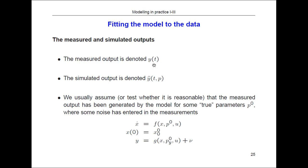Here we have measured output denoted y and simulated output denoted y-hat. A basic assumption is that the measured output has been generated from the model for some true parameters p0 plus some noise ν. This is the measurement equation: true parameters plus noise. If that is the assumption, then there are some ideal parameters — typically as close as possible to the true parameters p0 — that we are looking for.